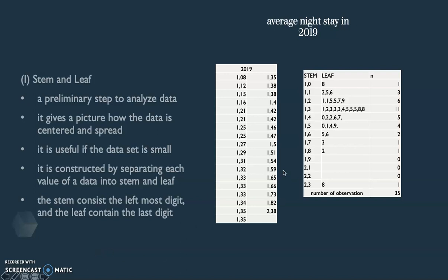Here I give an example taking the average night stay in 2019 from each province. We have n equals to 35, the number of observations. The digits have two decimals. So what I do is I divide the data, the first two leftmost digits as the stem and the last digit as the leaf.